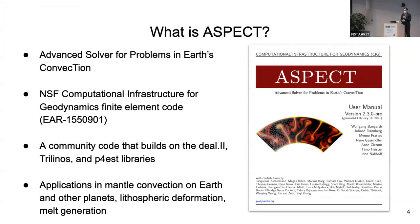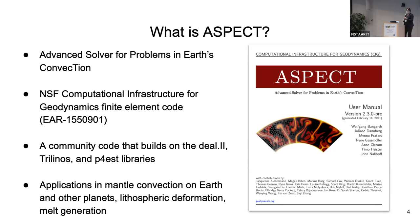So what is ASPECT? It stands for Advanced Solver for Problems in Earth Convection. It's an NSF CIG code, a finite element code, and very much a community code that evolves over time. There's even a hackathon going on right now, according to all of the GitHub alerts in my email. It builds upon deal.II, Trilinos, and P4est libraries.